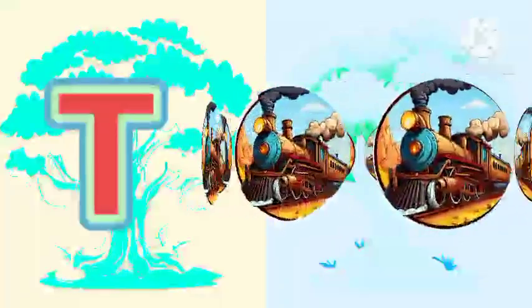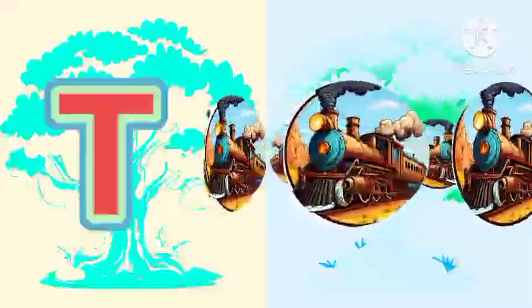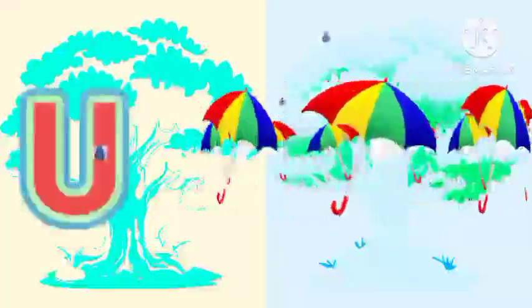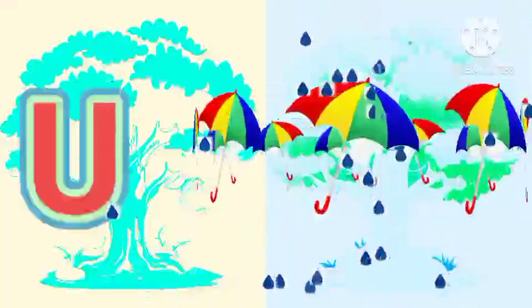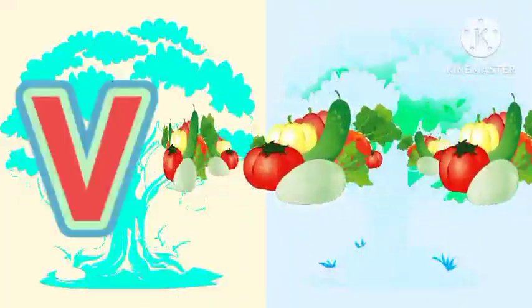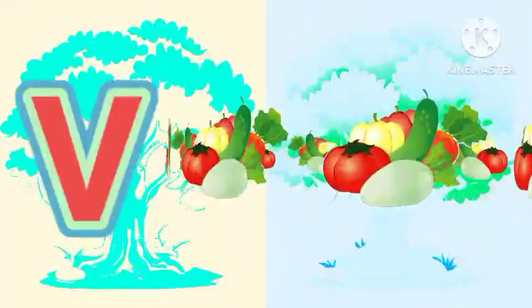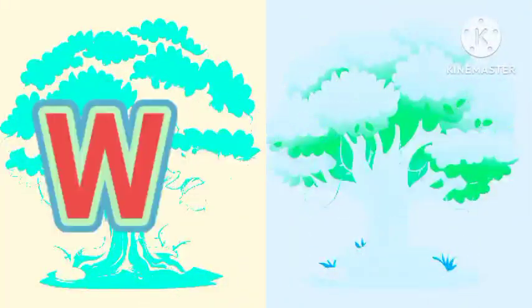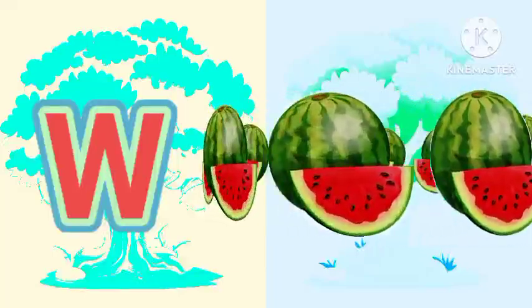T for train, U for umbrella, V for vegetables, W for watermelon.